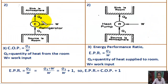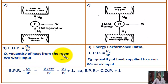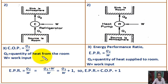In a refrigerator, number three: the efficiency of a refrigerator is measured by COP — coefficient of performance. COP equals Q1 divided by W, where Q1 is the amount of heat removed from the room.